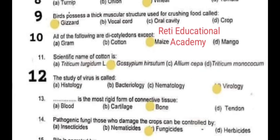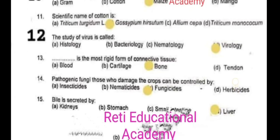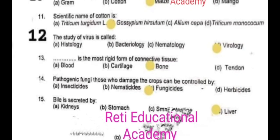Question 12: The study of viruses is called D – Virology. Question 13: The most rich form of connective tissue is bone. Question 14: Pathogenic fungi that damage crops can be controlled by fungicides. Question 15: Bile is secreted by D – Liver.